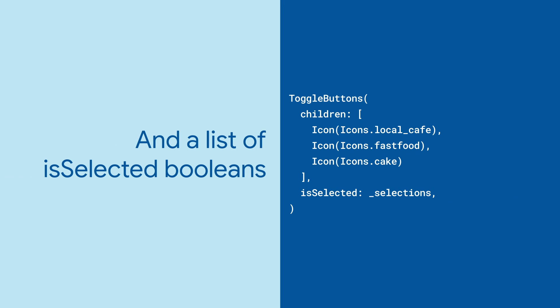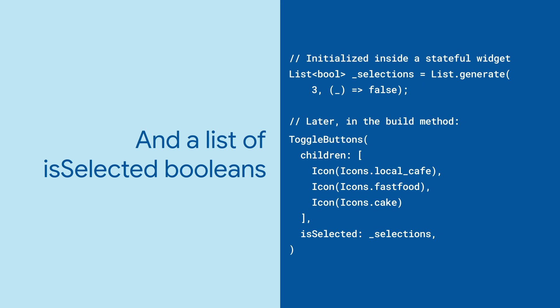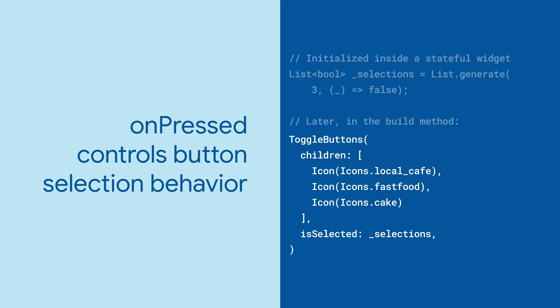Next, set the isSelected parameter. This takes a list of Booleans that's the same length as your children list. The isSelected list controls which of the buttons, if any, are selected. Here, we control what buttons are selected with a variable inside a stateful widget.